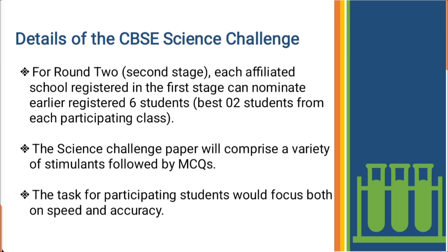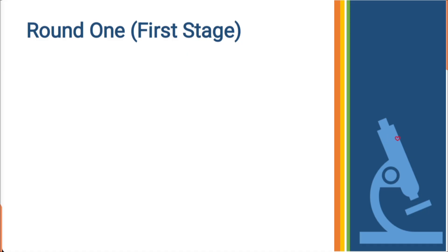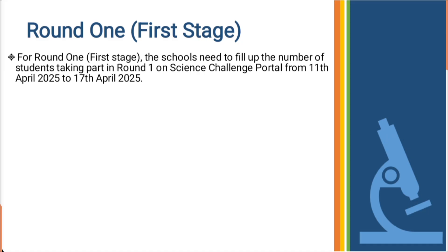For round 2, which is Stage 2, each affiliated school registered in the first stage can nominate 6 students — the best 2 students from each participating class. The Science Challenge paper will comprise a variety of stimuli followed by MCQs. The task for participating students would focus both on speed and accuracy.